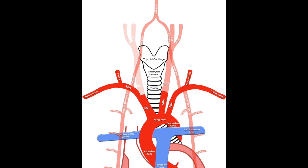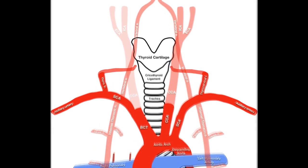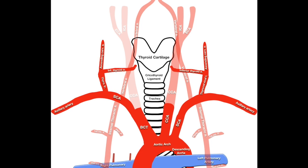The third branch, the thyrocervical trunk, supplies the neck and scapular regions through four branches. The neck viscera is supplied by the medially projecting inferior thyroid artery. The ascending cervical artery ascends anterior to the transverse processes of cervical vertebra and supplies the lateral muscles of the upper neck as well as the lateral aspect of the spinal cord.